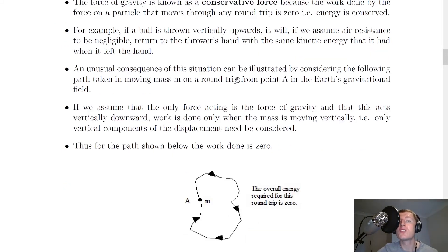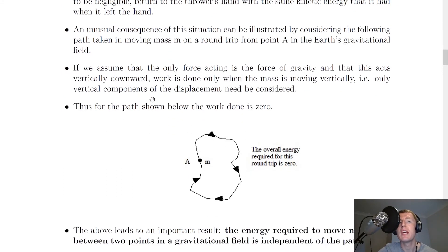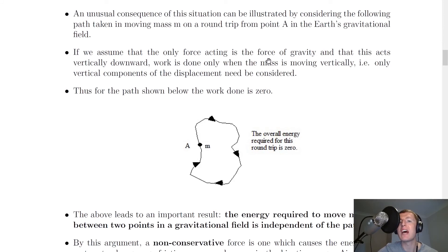An unusual consequence of this situation can be illustrated by considering the following path taken in moving mass M on a round trip from point A in the Earth's gravitational field. If we assume that the only force acting is the force of gravity, and that this acts vertically downwards, then work is done only when the mass is moving vertically, i.e. only vertical components of the displacement need to be considered, and there will therefore be no work done in the mass when it's moving horizontally.